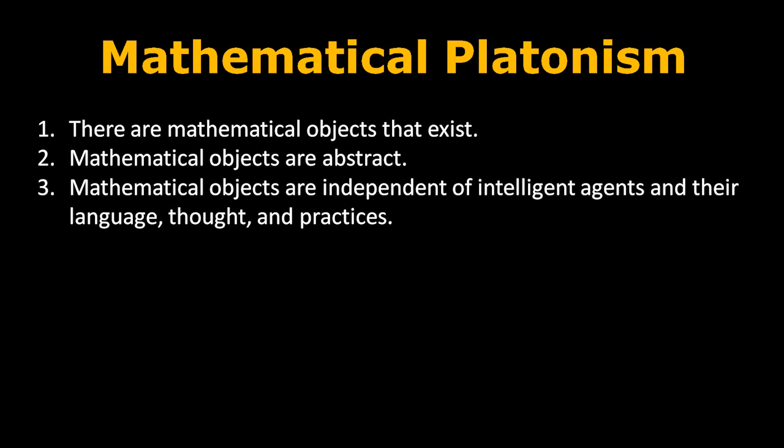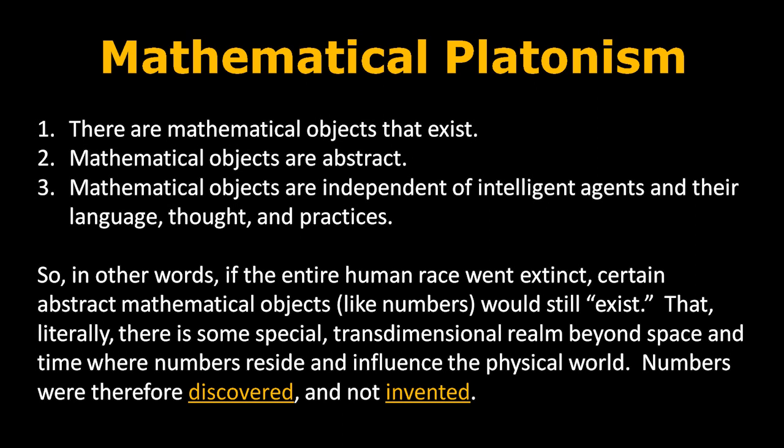The definition you see here is taken straight out of Stanford's online Encyclopedia of Philosophy, which identifies three core claims for mathematical Platonism. First, there are in fact mathematical objects that exist. Second, mathematical objects are abstract, meaning they don't necessarily occupy a position in space and time or have mass. And third, mathematical objects are independent of intelligent agents and their language, thought, and practices. So if you think about it another way, even without people around to talk about these things, mathematical objects — and in particular numbers — would still literally exist, but not in the usual sense that most things exist. Rather, these abstract objects reside in a kind of special transdimensional realm beyond space and time. And even though numbers don't occupy space or have mass, they still somehow manage to exert an influence over events within space and time.